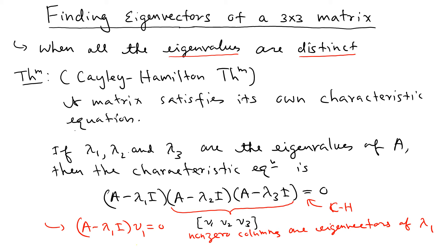This simple idea comes from the Cayley-Hamilton theorem. We just need to multiply two matrices to get the eigenvectors, rather than using the long six-step Gauss-Jordan elimination process. Let's look at this in a problem.